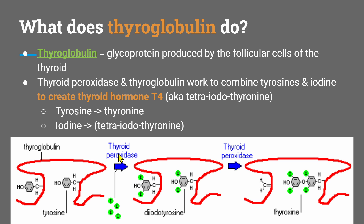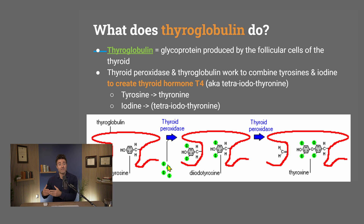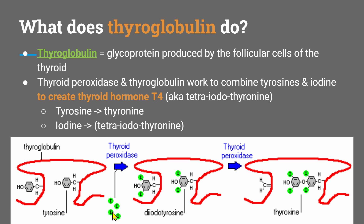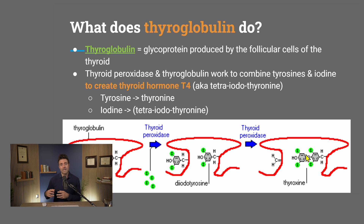With thyroglobulin and thyroid peroxidase, they take tyrosine — the amino acid tyrosine — and combine it with iodine. Through a few steps, you end up with tetraiodothyronine, T4 — tetra meaning four iodine. The tyrosine becomes a tyrosine backbone, and you have tetraiodothyronine. So thyroglobulin works along with thyroid peroxidase to create thyroid hormone, mainly T4. A small amount of T3 is also released via the utilization of iodine and tyrosine.